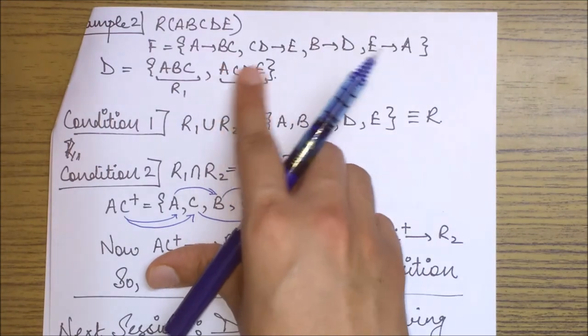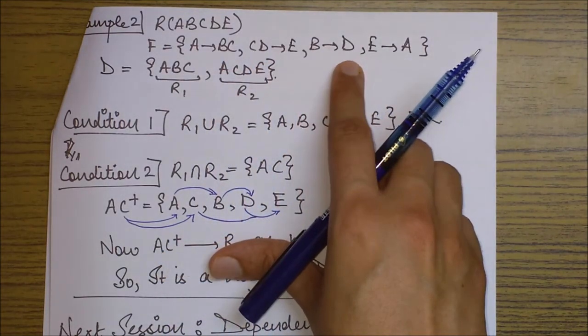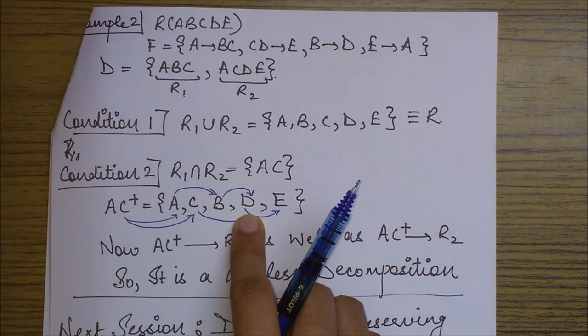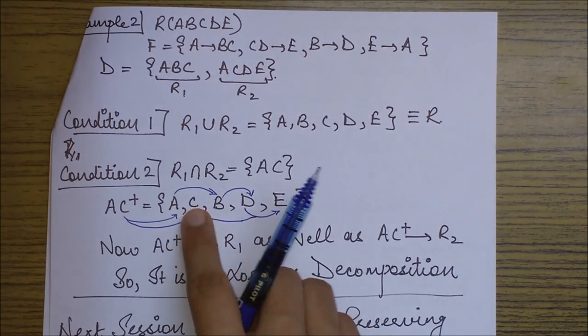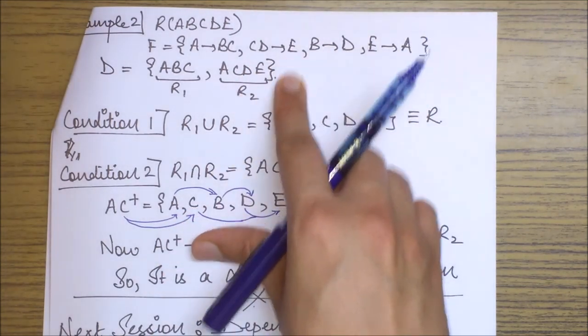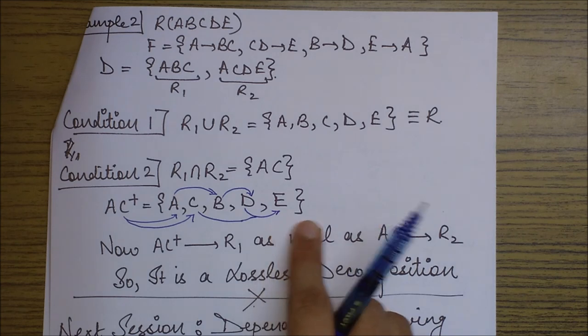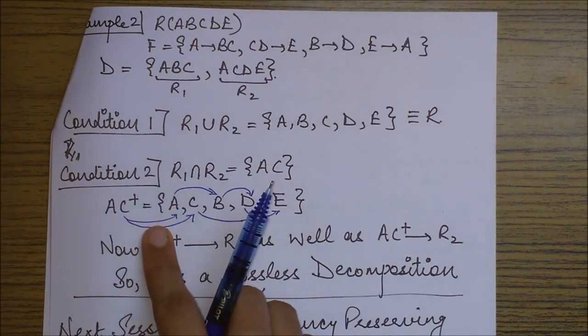Then next from B, I am also able to reach D. D gets entered into this set. Then from the CD, I am able to reach E. E gets entered into the set and we complete with all the attributes.